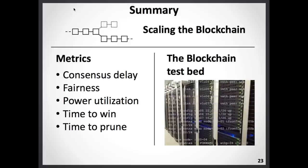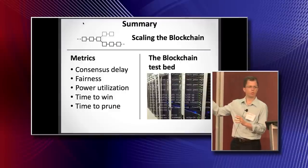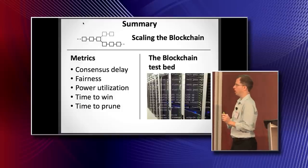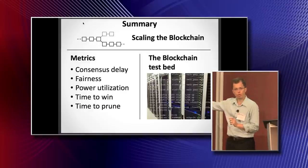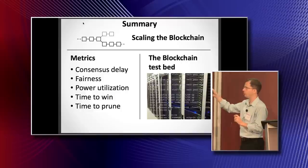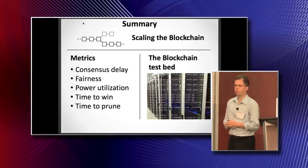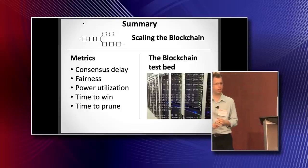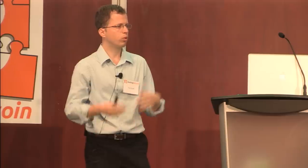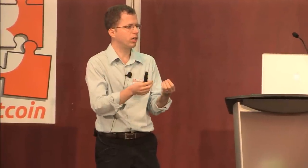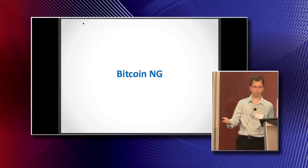In summary: I talked about scaling the blockchain. We gave clear metrics—consensus delay, fairness, power utilization, time to win, and time to prune—as a way to evaluate results. These experiments did not evaluate any of the current BIP suggestions; this was just raw Bitcoin to see clear stark trends. We introduce the blockchain testbed—we are very happy to run your code on it, we're looking for collaboration. We want to run experiments with your real working client, make it big, realistic, and effective, and test real options for Bitcoin and beyond.